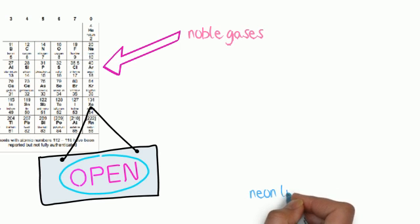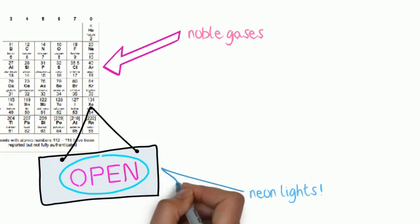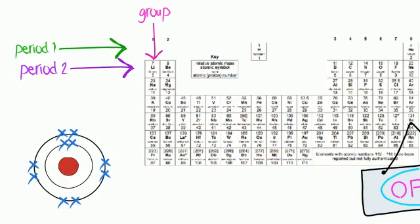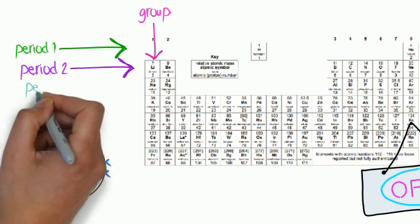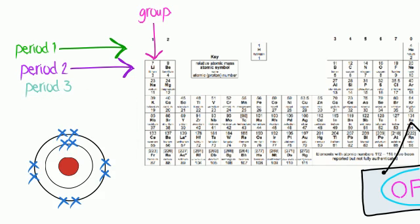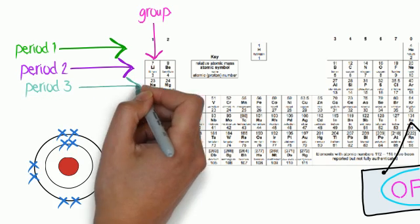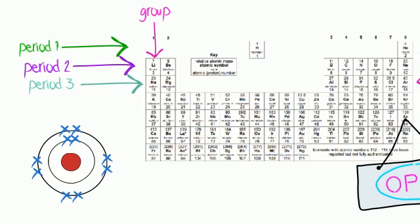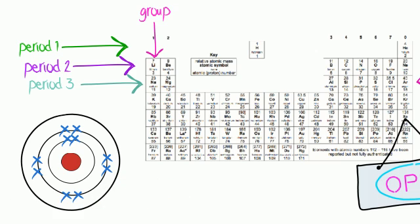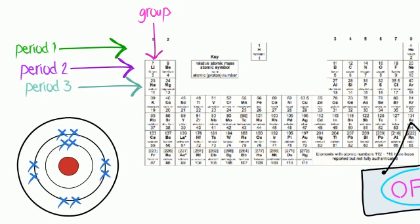This is called bonding, and I will explain this in more detail in my bonding video scribe. Let's look at period 3, from sodium to argon. Sodium is in group 1, and has 11 electrons: 2 in the first shell, 8 in the next shell, and 1 in the outer shell.